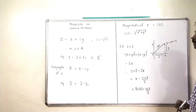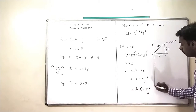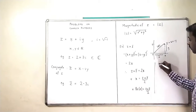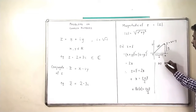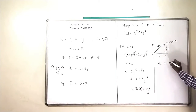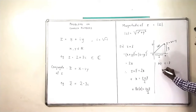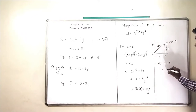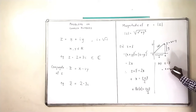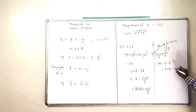On the other hand, if we try to calculate Z minus Z bar, then what will happen? The X will cancel; we will get X plus iY minus X minus iY.